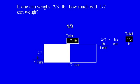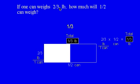With fractions, the multiplier can also be a fraction. If one can weighs two-thirds pounds, how much will one-half a can weigh? Again, if you're not sure, think of the whole number equivalent. You're given the value for one thing — one can is two-thirds a pound — and then you're given the number of things.